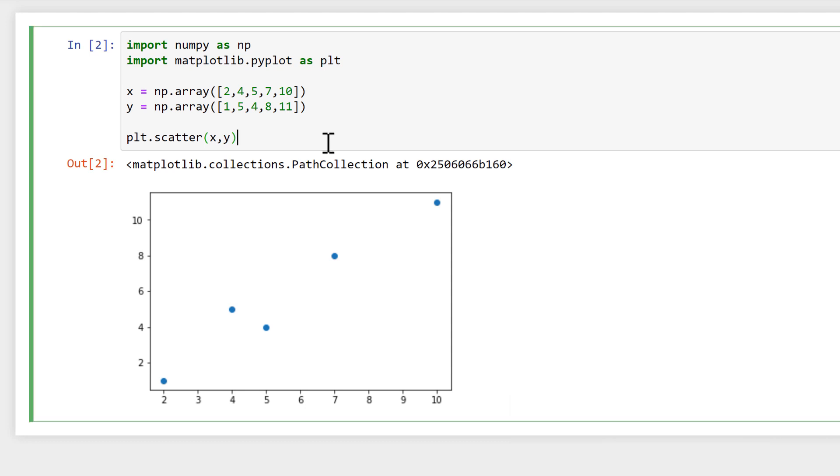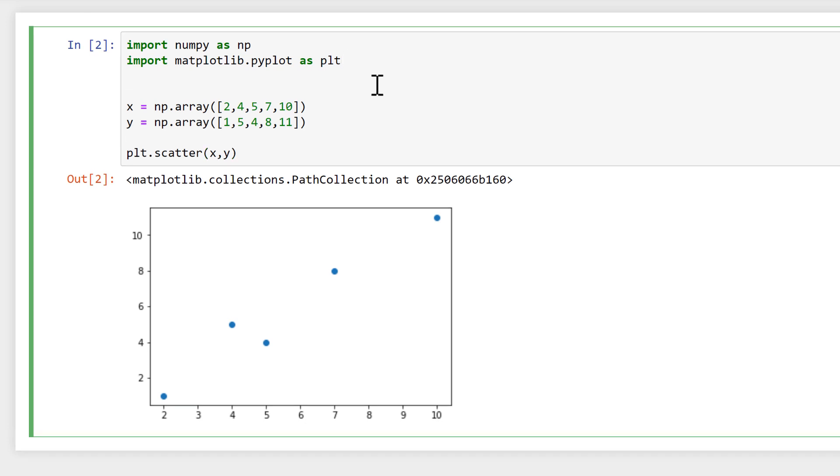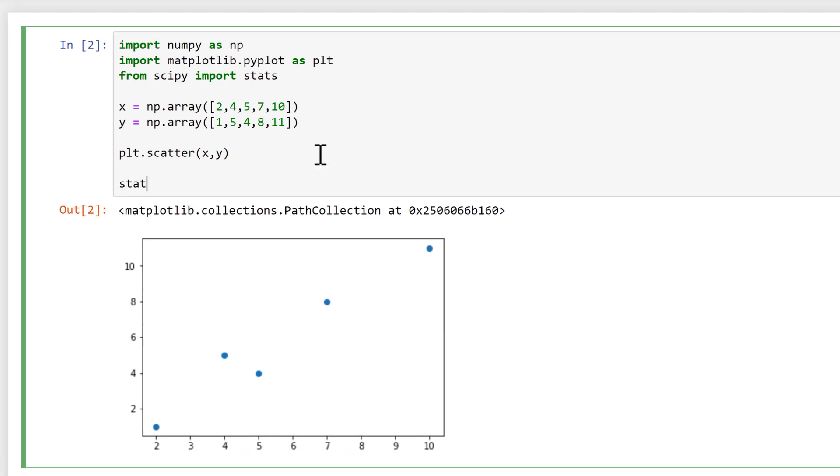Then we want to add in a linear trend line and statistics, so we will type from scipy import stats. Then we'll do stats.linregress, which stands for linear regression, which is what we want, and this needs the x and y values as well.